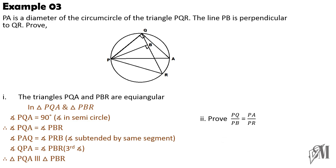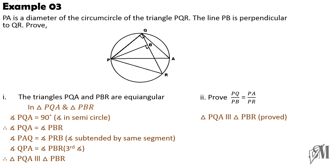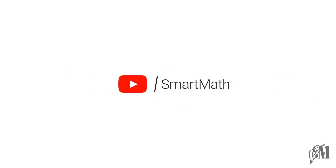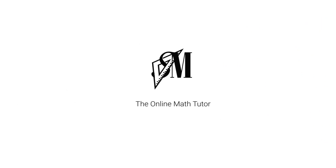The second part requires proving PQ over PB equals PA over PR. Since the two triangles are already proved similar, we can write down this proportionality because they are corresponding sides and they are proportional. I hope I have made myself clear about equiangular triangles, the theorems, and how to apply the theorems in questions. See you with another smart tactic — goodbye!